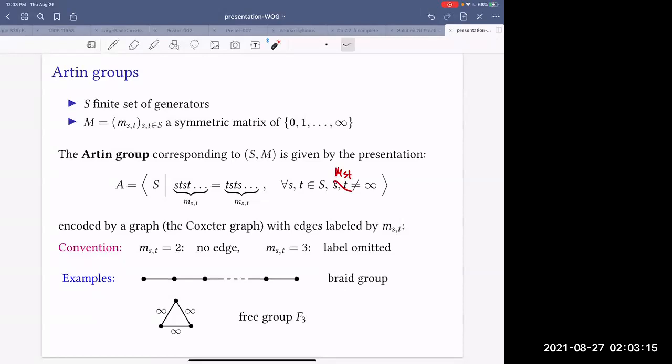this specific thing is our usual braid group. The neighboring generators are braided in the sense that ABA equals BAB. And if they are not neighboring, they commute. And triangle with infinite labels encodes the free group of rank 3. So that's the definition of Artin groups.